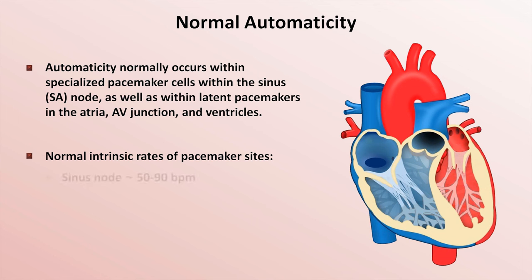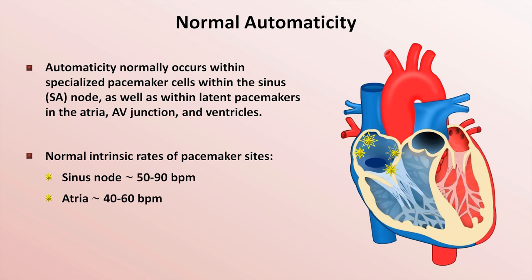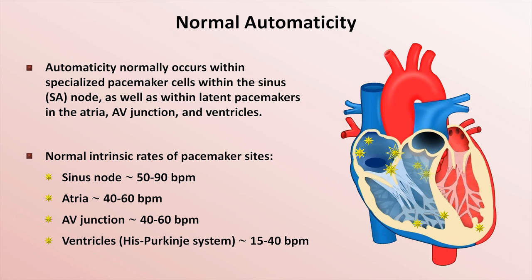The normal rate of the sinus node, which is the heart's chief pacemaker, is 50 to 90 beats per minute. Latent atrial pacemakers, which are mainly clustered specifically in the right atrium in the crista terminalis, near the coronary sinus, and adjacent to the tricuspid valve, spontaneously depolarize at approximately 40 to 60 beats per minute. The AV junction pacemakers depolarize also at about 40 to 60 beats per minute, and latent pacemakers within the His-Purkinje system are at 15 to 40 beats per minute.